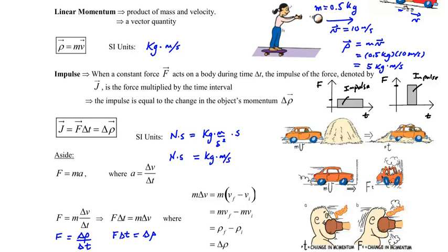In summary, momentum is the product of mass times velocity and is a vector quantity in the same direction of the velocity. Impulse is the change in momentum that occurs from the final momentum minus the initial momentum, and it is equal to the product of the force times the time interval, which is the time of impact.